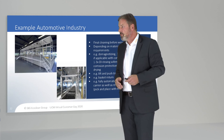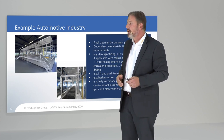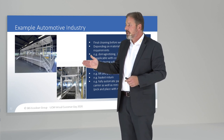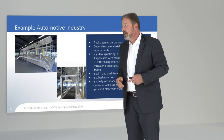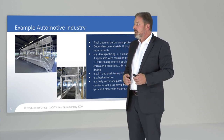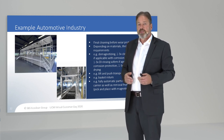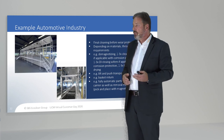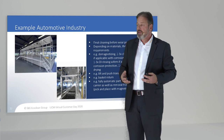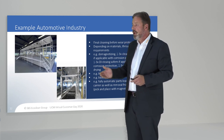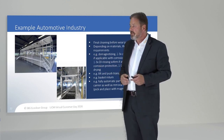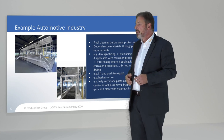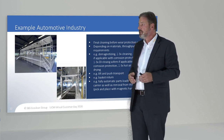Another example is the automotive industry — for instance, final cleaning before wear protection coating. Depending on material, throughput, and requirements, it is sometimes necessary to demagnetize parts before cleaning, rinsing, and drying. During rinsing, if you have materials like 100Cr6, a protection step is necessary during rinsing to achieve spotless, perfect drying without corrosion. Other options include a basket return or fully automatic parts loading in the goods carrier, as well as removal from the goods carrier — for example, with a pick-and-place system or magnetic handling.